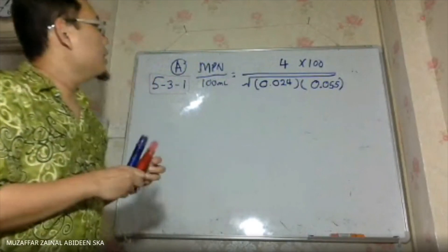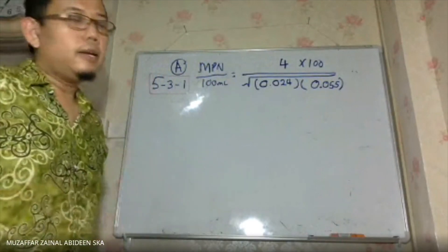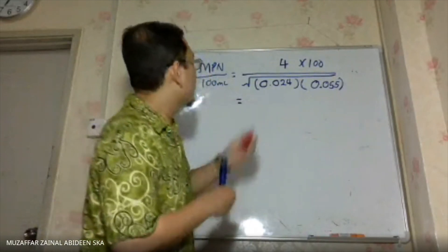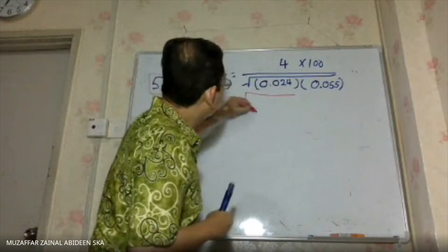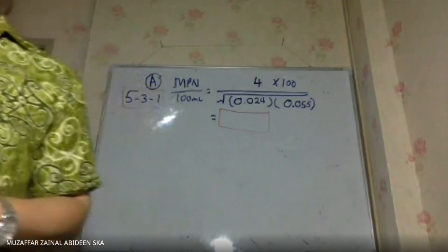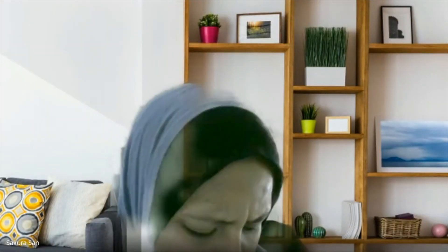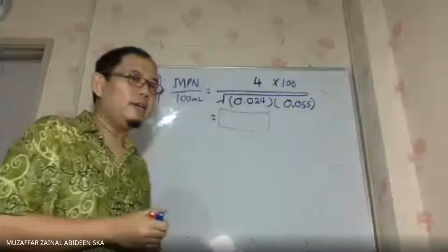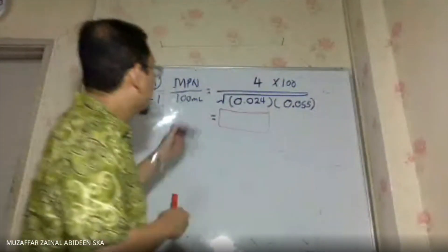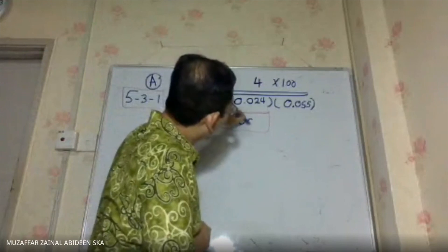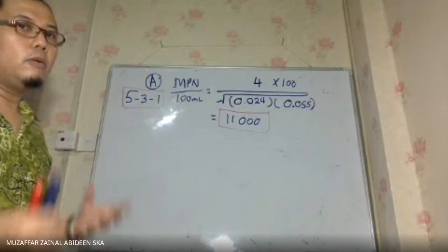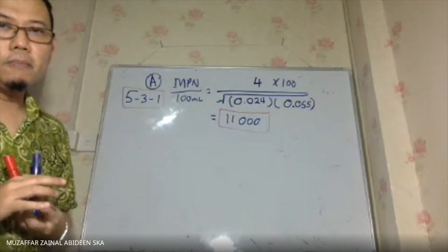Try to get the answer and give it to two significant figures. The answer is 11,000 — that's 11,000 MPN per 100 ml. So this is very polluted water, as you can see.